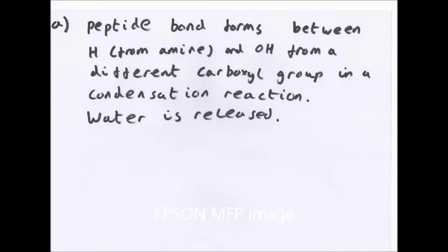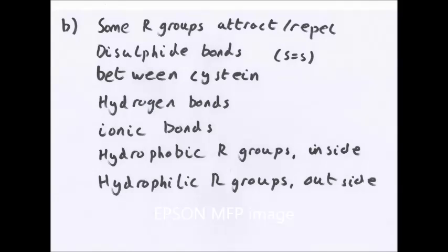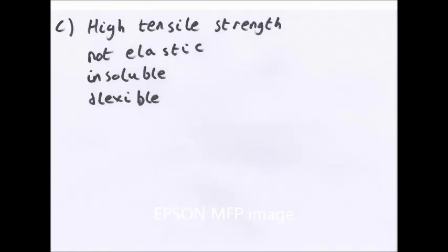Question A: Peptide bonds form between H groups from amino acids, the H part of an amine, and the OH from a different carboxyl group. They're from two different molecules in a condensation reaction where water is released. B: Some R groups attract, others repel. You have disulfide bonds between cysteine groups which contain sulfur. You have hydrogen bonds, ionic bonds, hydrophobic R groups inside the protein, and hydrophilic R groups outside the protein. And finally, properties of collagen: has high tensile strength, not elastic. It's insoluble in water and flexible.